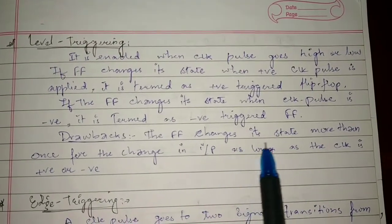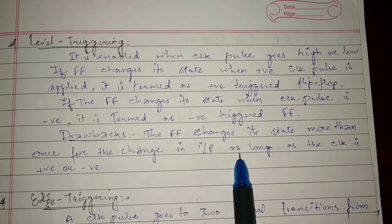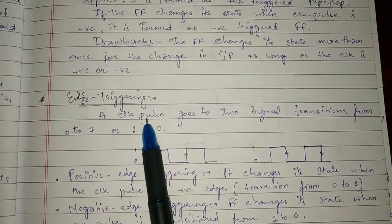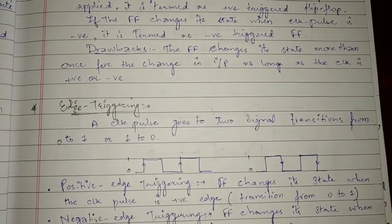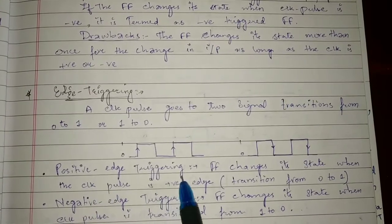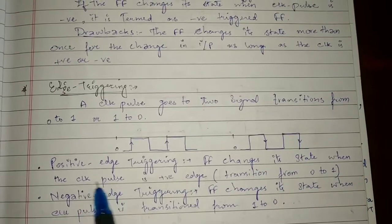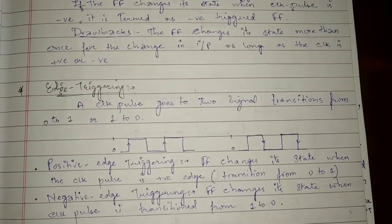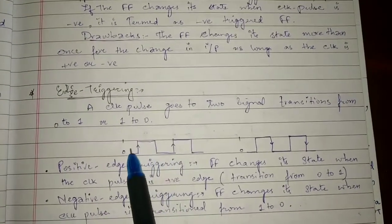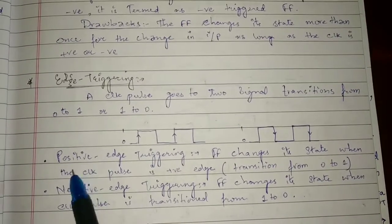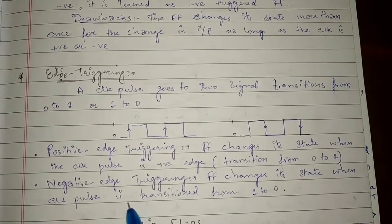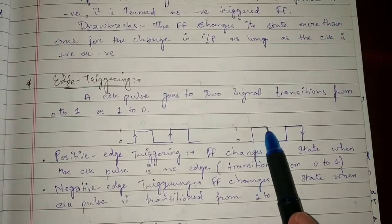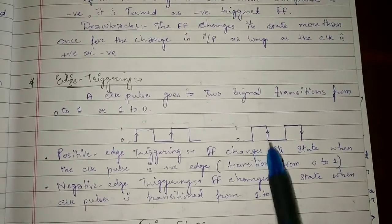Level-triggering has a drawback: the flip-flop can change its state more than once as long as the clock remains positive or negative. For edge-triggering, a clock pulse goes through two signal transitions — from zero to one, or from one to zero. In positive edge-triggering, the flip-flop changes its state on the transition from zero to one. In negative edge-triggering, the flip-flop changes its state on the transition from one to zero.